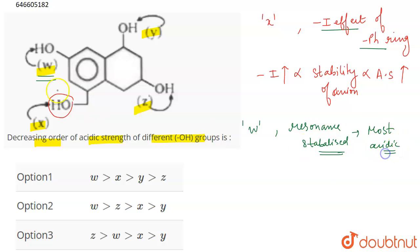Because here when it will be removed, there will be O negative which will be formed, which will be stabilized by resonance. So that will be the most stable and therefore the most acidic OH group. Now also the inductive effect, the effect is inversely proportional to the distance.